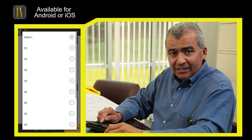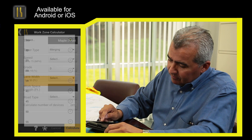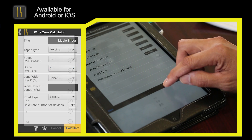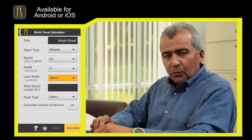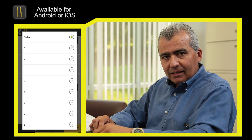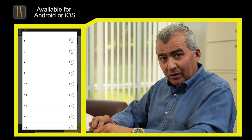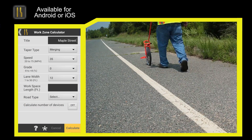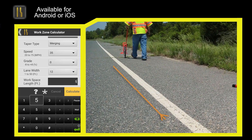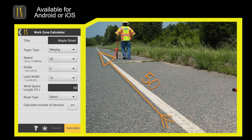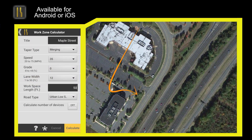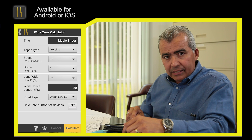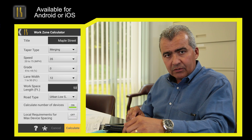The speed for this roadway is 35 miles per hour. Since the roadway is level, we're going to enter a grade of zero. The width of the offset — in this case the width of the lane — is 12 feet. The workspace length in this case is 50 feet, so we enter that in. The road we have selected is urban low speed, so we enter that option. Then we ask the app to calculate all the MUTCD component parts of the work zone.